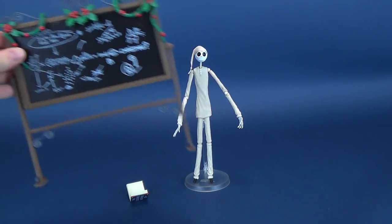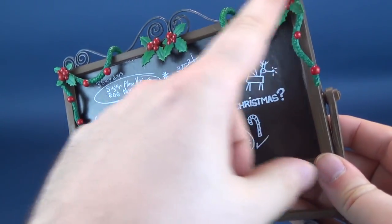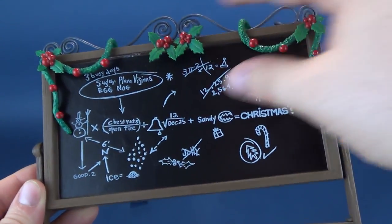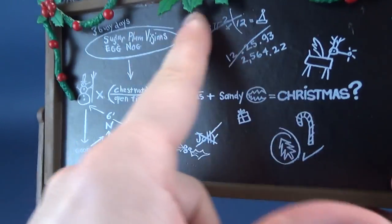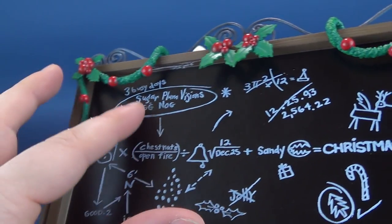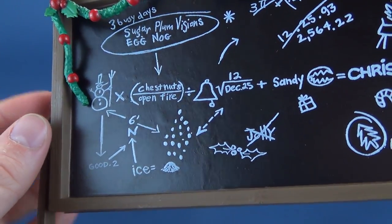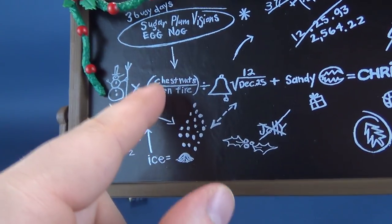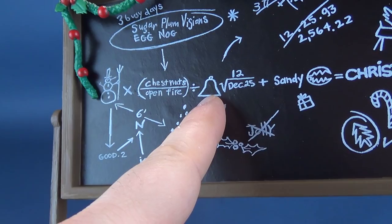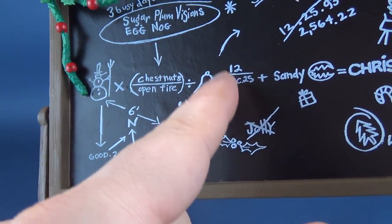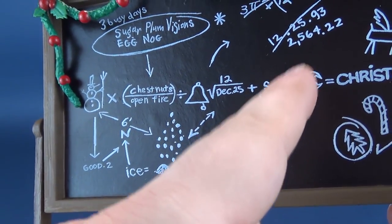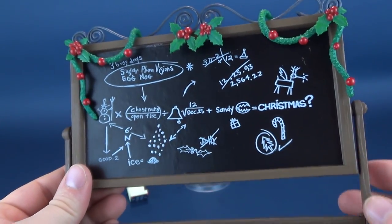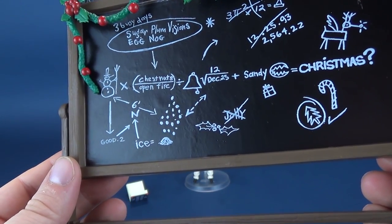The other thing he comes with included is this really neat looking easel board. The easel board's got some holly there adorning the top of it, a little bit of nice crown work and scroll work done along the top there. You can see that Jack has started to plan out his Christmas strategies. You can see Three Busy Days, Sugar Plum Visions, and Eggnog, which goes into Chestnuts and Open Fire. The formula here would be hard to deduce, but somehow Snowman times Chestnuts over Open Fire divided by Silver Bells divided by, or is that the square root of 12, December the 25th, plus Sandy Claus equals Christmas. A little vague, but we know enough of the plan that he has in place.